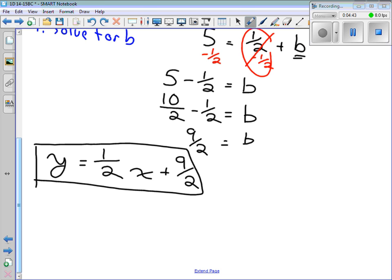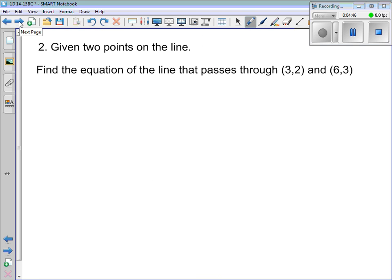The other situation, the other kind of question you might be given, is instead of being given a slope and a point on the line, you're just given two points that are on the line. Like this one here. Find the equation of the line that passes through points (3,2) and (6,3). The first thing we want to do is remind ourselves. General form. This is always our starting point here. We're going to start with y equals mx plus b. We want to end up with it at the end.